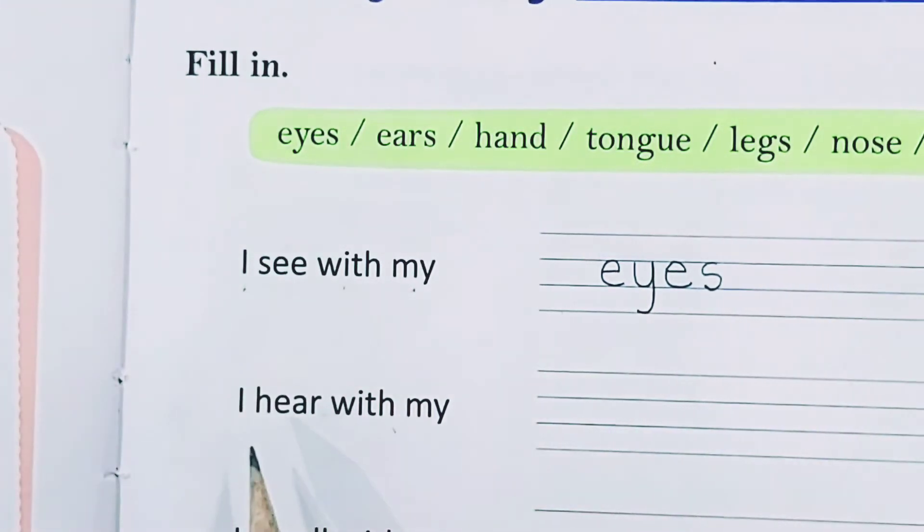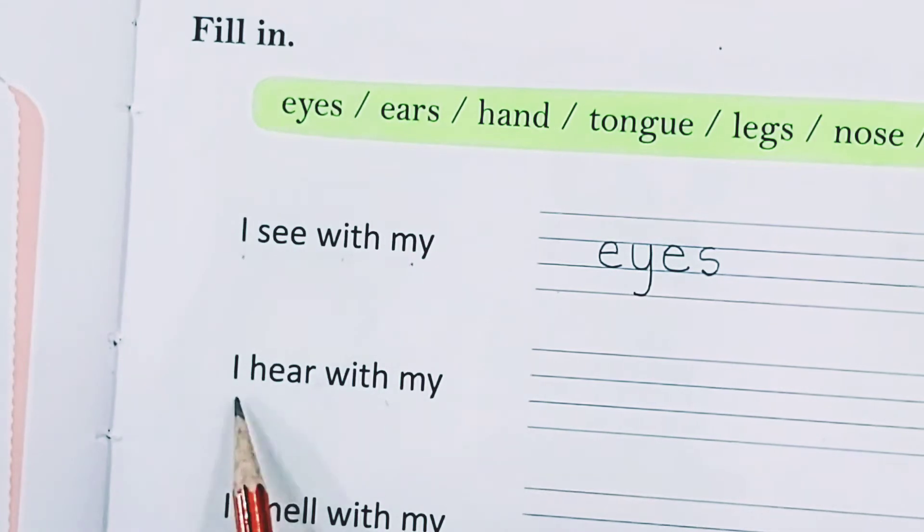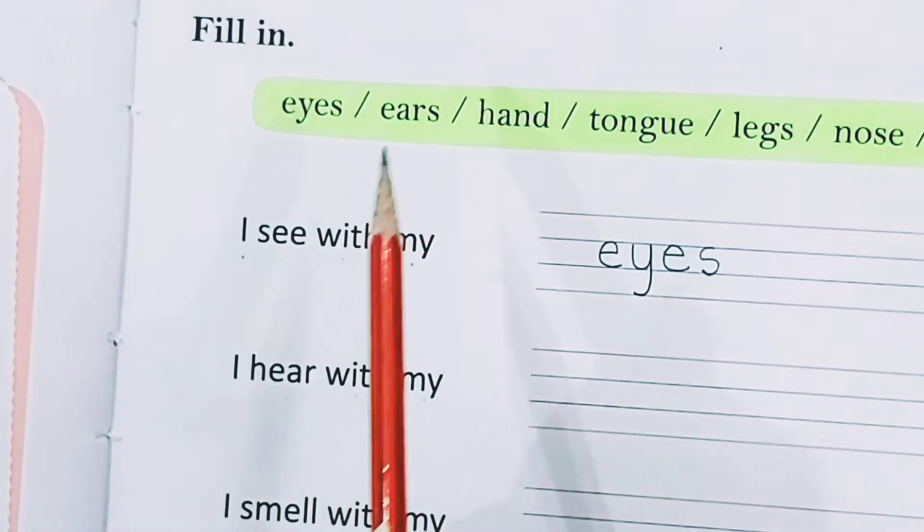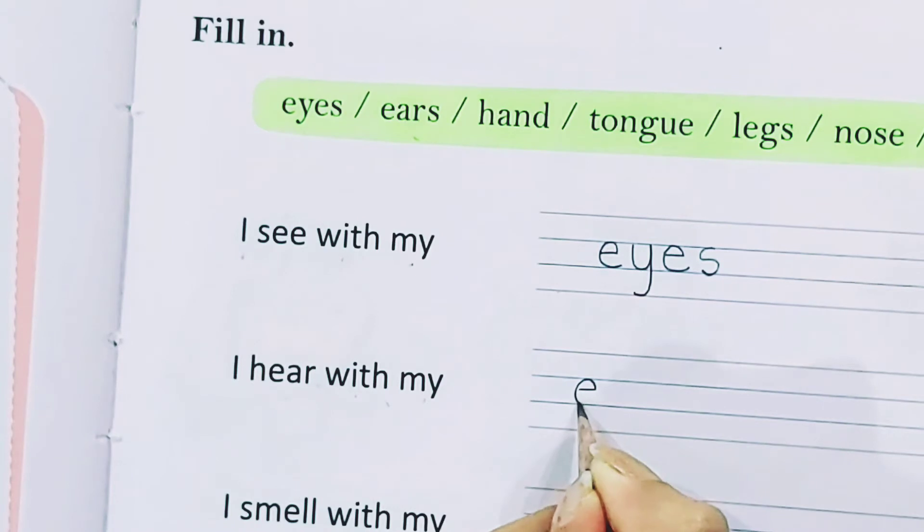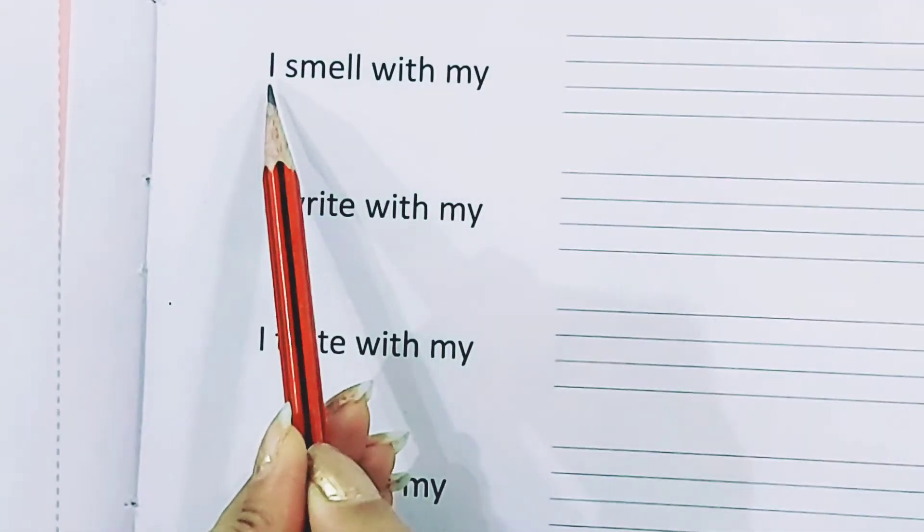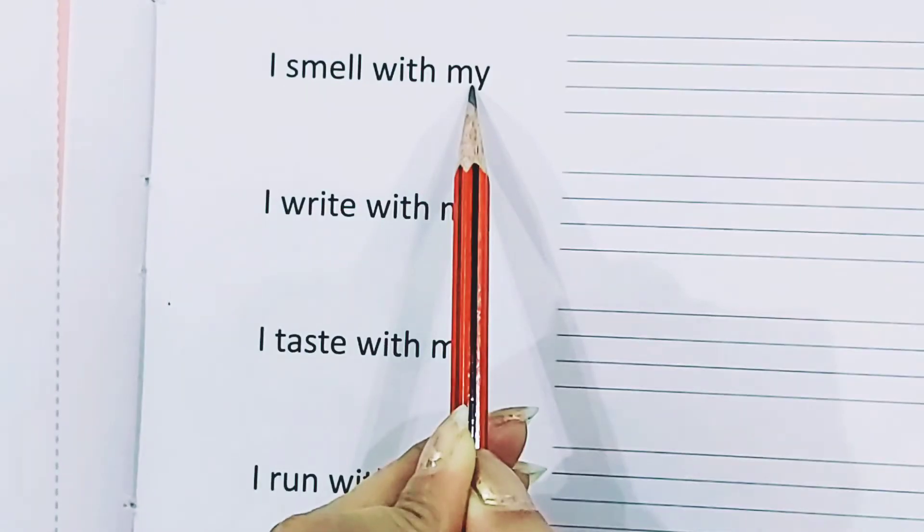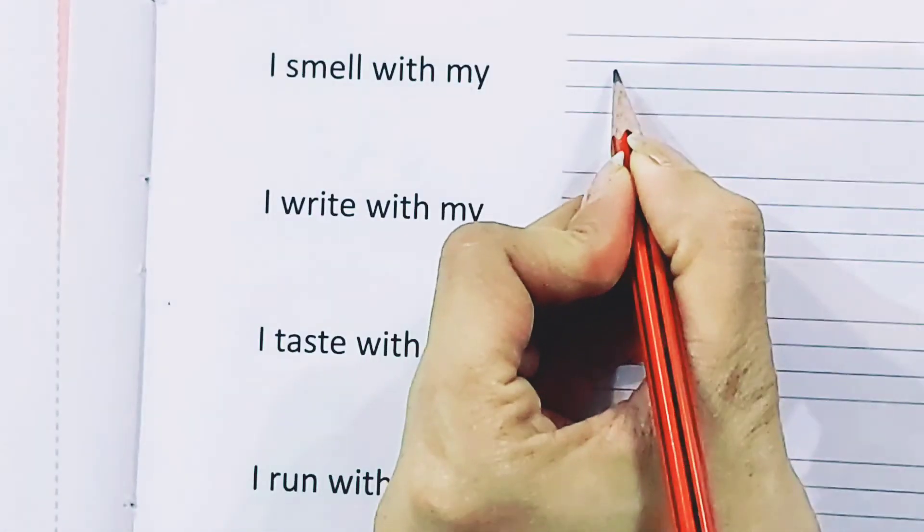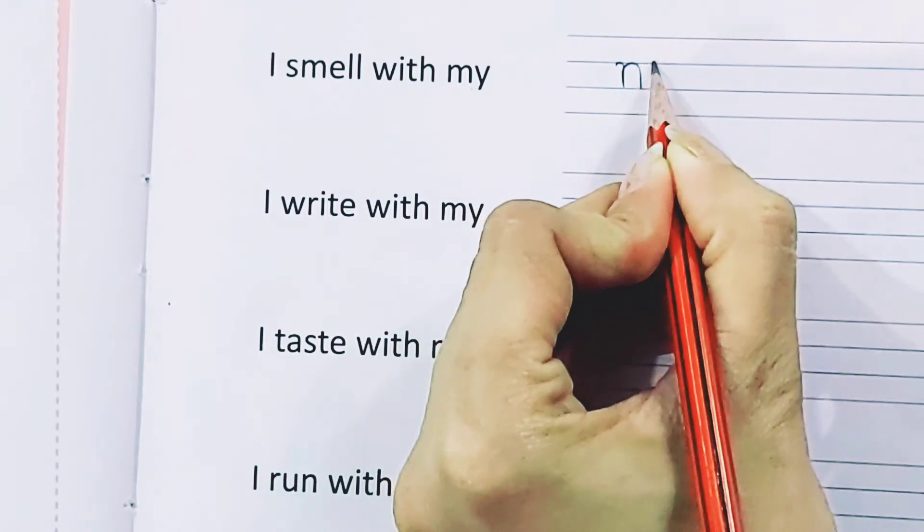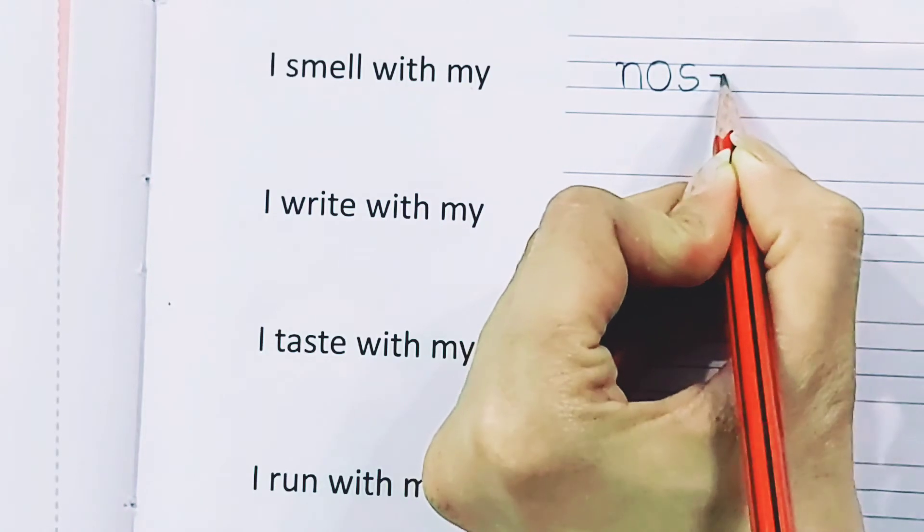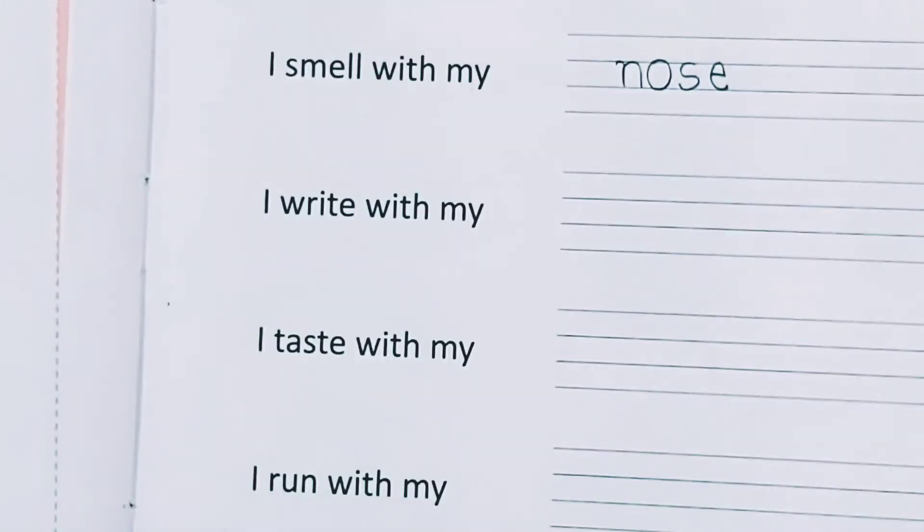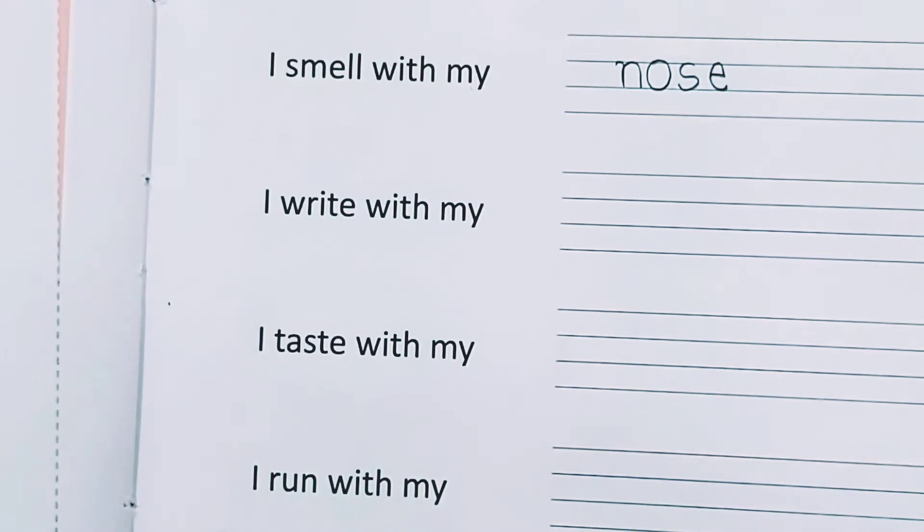Now, the next sentence is, I hear with my ears. So, the right answer is, ears. E-A-R-S. I smell with my nose. N-O-S-E. Nose. You will write, nose.